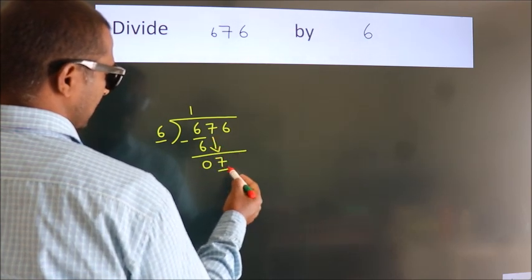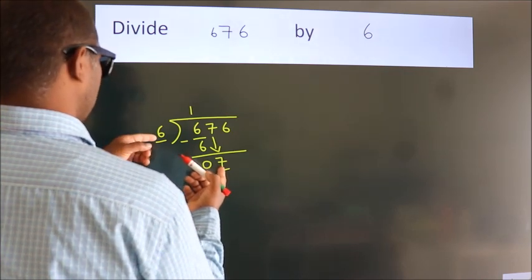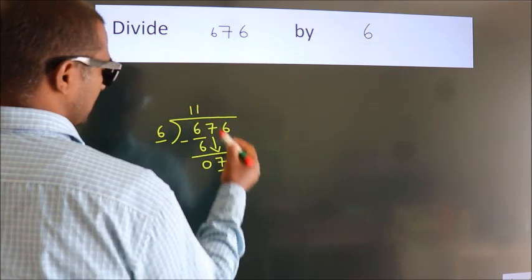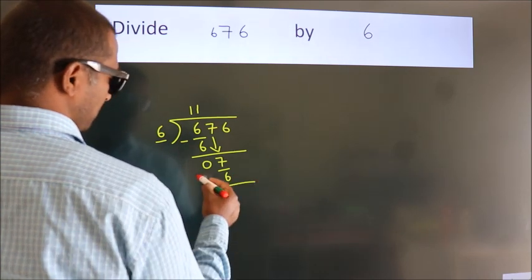Seven down. So seven - a number close to seven in the six table is six ones six. Now we subtract and get one.